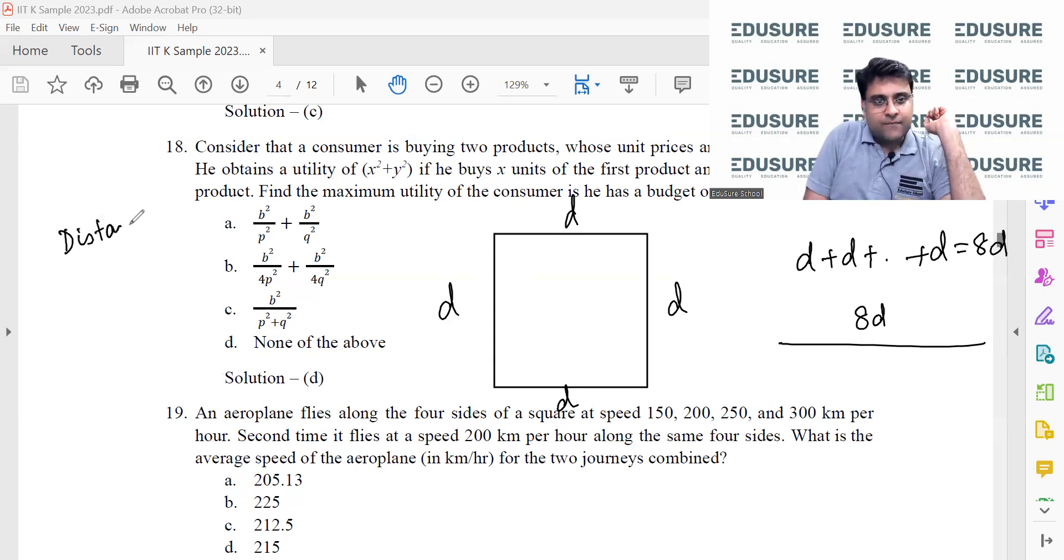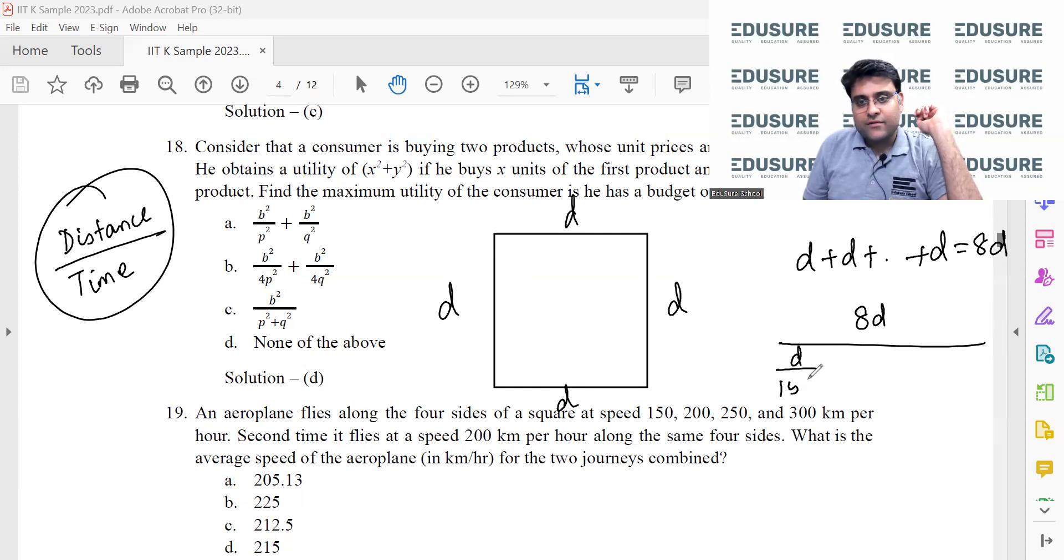Distance by time will obviously give you the average speed. Total distance is 8d. Time: in order to cover the first distance, speed is 150, so d/150, next d/200, next d/250, next d/300, and then again four distances it is covering at a speed of 200. So you do this, you can cancel out d.